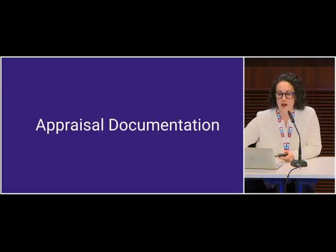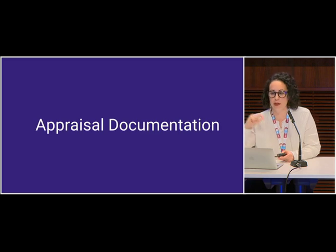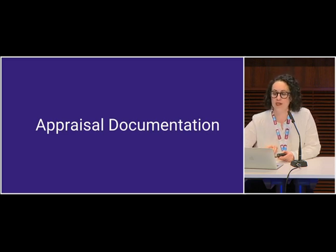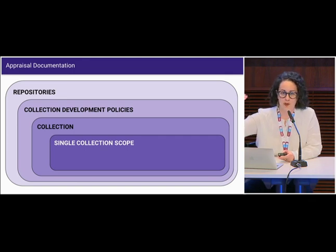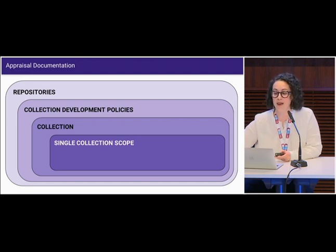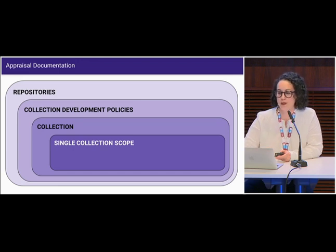So now we need to use these archival values to appraise and curate our web archives and document how we used them. Let's review. Collections are what we build and curate, each summarized by a collection scope. Appraisal is the process of how and why we collect specific items or groups of items. Collection development policies are high-level guidance that govern both. Visualized as a nested hierarchy: repositories have collection development policies; those policies guide what gets collected and excluded; the appraisal process determines an individual collection's contents and therefore its scope; and appraisal documentation serves as your internal record of this process for transparency and responsible stewardship.